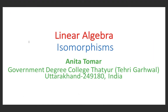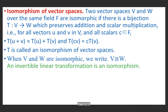Good morning. Today we will study isomorphisms. Two vector spaces V and W over the same field F are isomorphic if there is a bijection T from V to W which preserves addition and scalar multiplication.